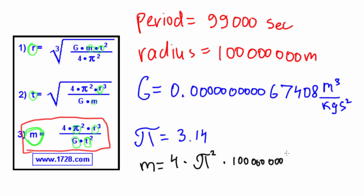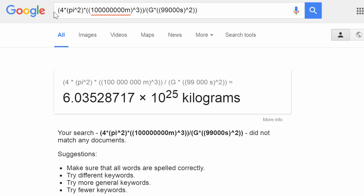Now we're going to do some calculator work here. We're going to take 4 pi squared multiplied by a million cubed (this is meters cubed), and then divide all of this by G, and then also divide this by 99,000 squared (second squared). I've decided to use the Google calculator here because it does a pretty good job with units. So it's 4 pi squared multiplied by 1 million meters cubed divided by G, which automatically calculates it, and divided by 99,000 seconds to the power of 2.